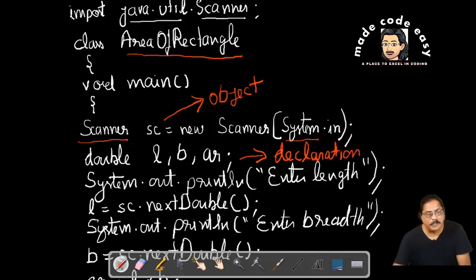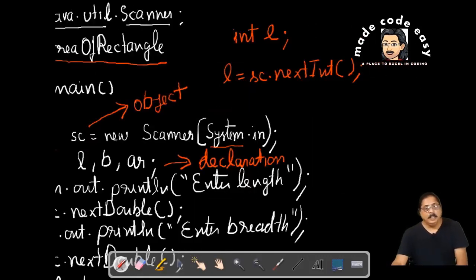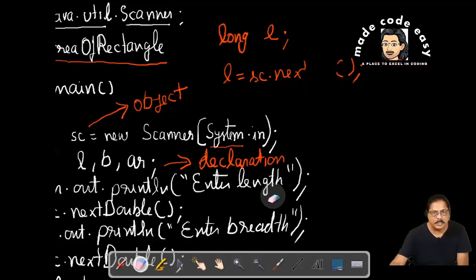In declaration statement, we tell what type of variable is. Suppose I take l as integer, so how you will input? I write down l equals sc.nextInt(). Suppose if l is different type, let's say long type, so we make it long.